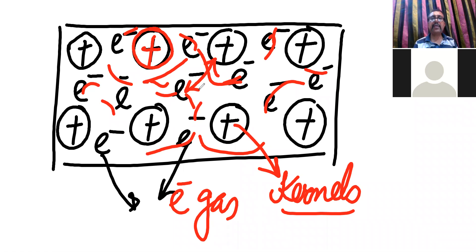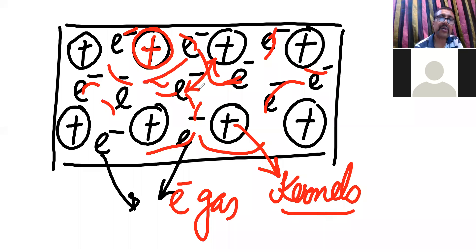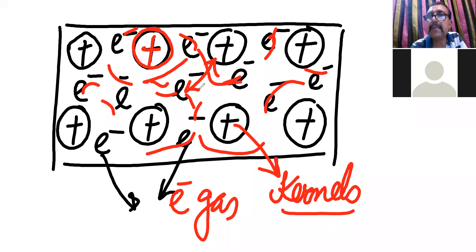This force of attraction between the negatively charged electrons and positively charged kernels is known as the metallic bond. So the metallic bond is the force of attraction present between positively charged kernels and the negatively charged electron gas. The constituent particles in metallic solids are the kernels.